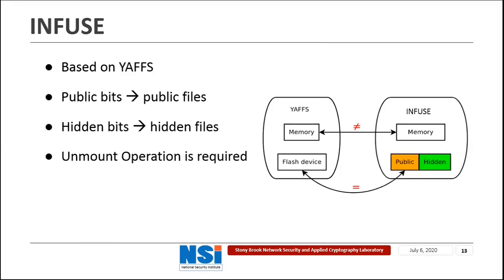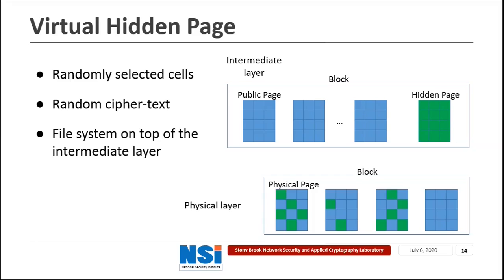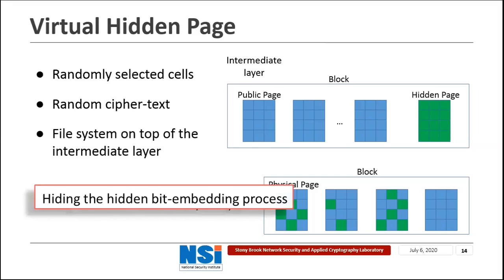Infuse requires an unmount operation before the adversary can see its disk layout. Now let's see how Infuse is designed in detail and how those challenges we mentioned before are solved. First, Infuse is built upon an intermediate layer above the physical layer of a NAND Flash device. We randomly select physical cells to store extra hidden bits and organize those hidden bits as hidden pages in the intermediate layer. As both public and hidden data are encrypted and the cells storing hidden data are randomly selected, the adversary has no way to know the locations where the hidden bits are stored.